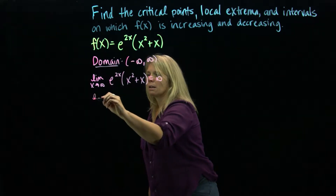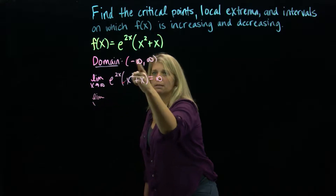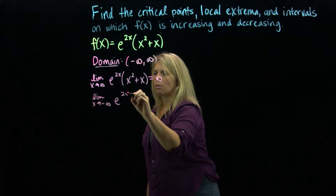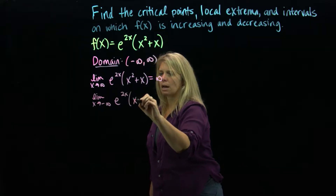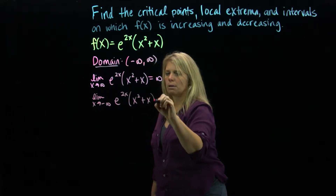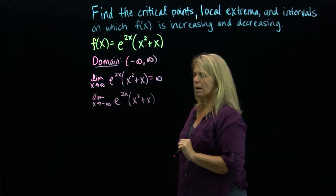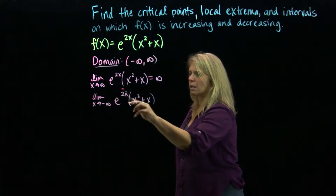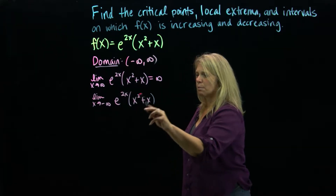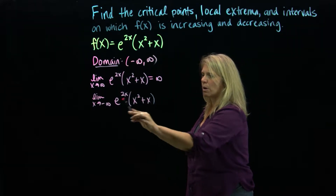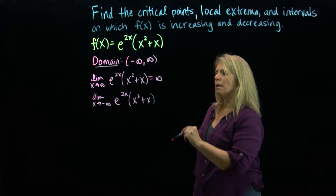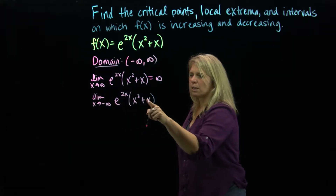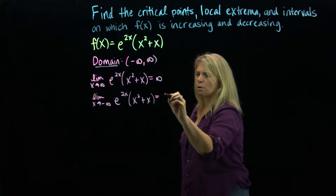When thinking about the limit as x approaches negative infinity, this requires a little more work. This exponential function, as x approaches negative infinity, will approach zero. The other part gets infinitely large, so the question is which one wins. Using numerical values, you should see pretty easily that these function outputs approach zero.